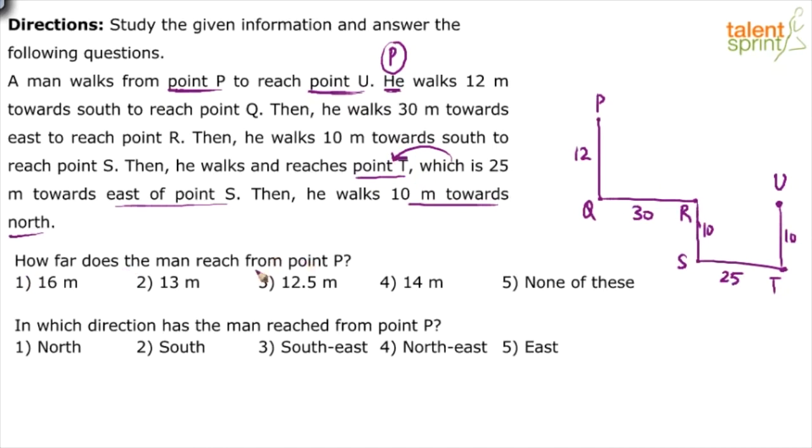Now answer the questions. How far does the man reach from point P? From point P, how far has he reached? Finally, when he has reached point U, how far has he reached? How much is the distance that he has traveled? Now this is a simple right-angled triangle that we get here. Apply Pythagoras theorem to get the answer.